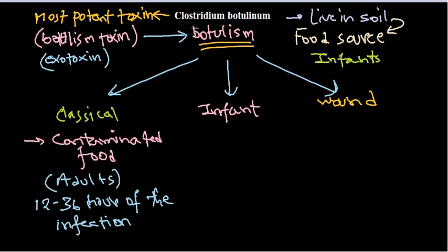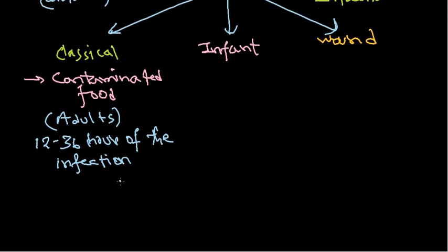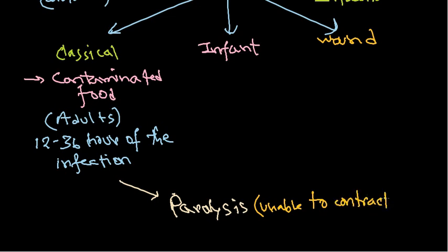Botulism is a kind of paralysis — a form of paralysis where you lose your ability to contract your muscles. This paralysis is caused by the toxicity of the Clostridium toxin. There are other kinds of paralysis caused by different bacteria, for example tetanus caused by Clostridium tetani, which is a spastic paralysis where the muscle stays contracted for an extended period.